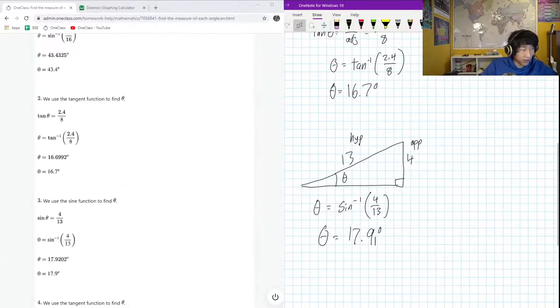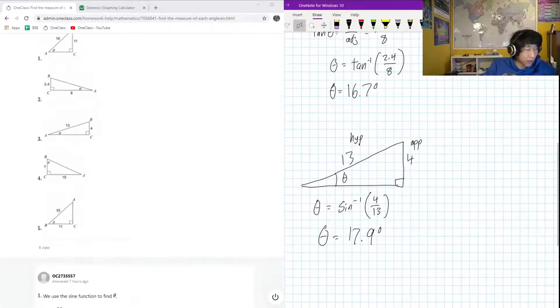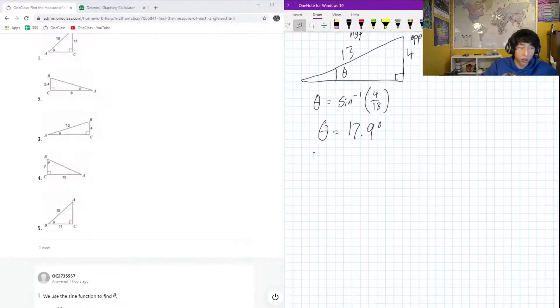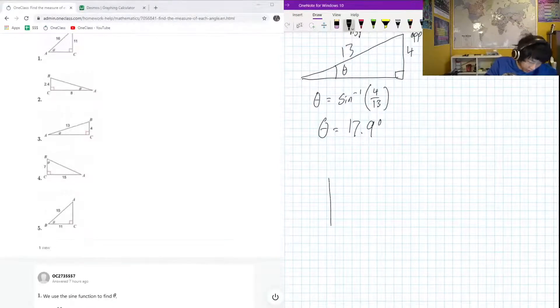So that was number 3, pretty fast. Now number 4, we can go through that a little bit more quickly now that we're more familiar with this type of procedure. Here we have this triangle, we got 7, we have 15 here is the angle.